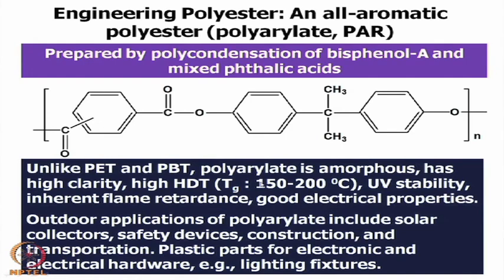This Tg range is due to the mixed phthalic acid moiety — from one linkage to another the glass transition temperature of the polymer varies. This polymer is stable to UV radiation and provides inherent flame resistance, and shows very good electrical properties. Since there are no ionic groups present, electrical properties are good, though with the oxygen atom present it cannot be fully resistant to high-voltage electric fields, but at low voltage this polymer shows good electrical resistance.